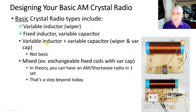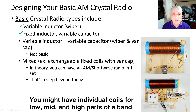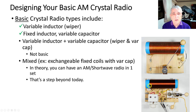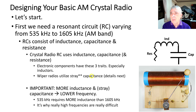The math on that is pretty significant, so we'll save it for another day. Then there's the mixed type: exchangeable fixed coils with a variable capacitor. In early radios it was common to have several interchangeable coils — you'd plug in a coil of a certain size, tune the capacitor, and when you exceeded that coil's range, plug in a different coil. In theory you can have AM and shortwave in one set, but again, we'll save that for another day.